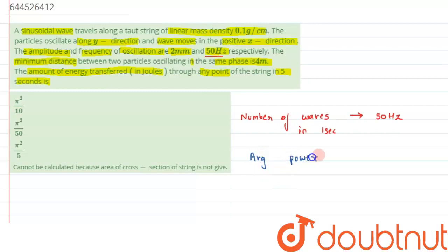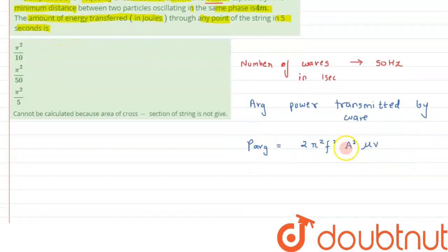Average power transmitted by string or transmitted by wave is given by P average equals 2π²F²A²μV. So this is the formula for average power we have already derived. This is the average power equation, we will use this formula to get it.